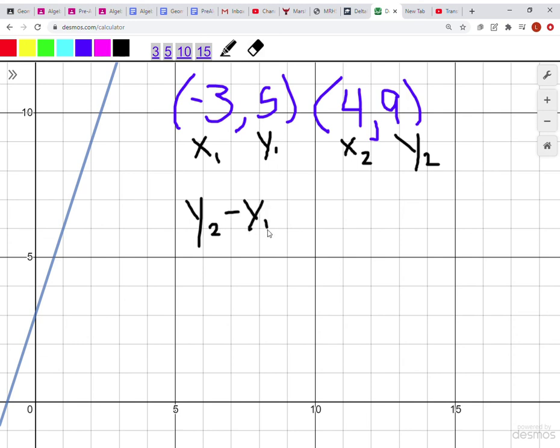Our formula again is y2 minus y1 over x2 minus x1. So let's plug some numbers in. Y2 is 9, y1 we have as 5, x2 we have 4, and x1 is -3.